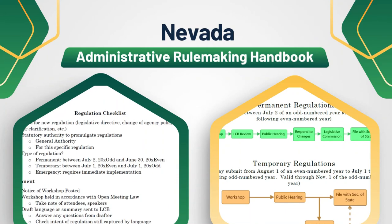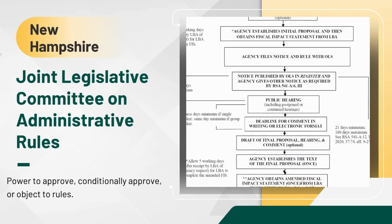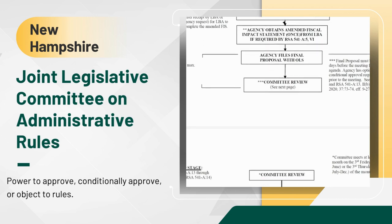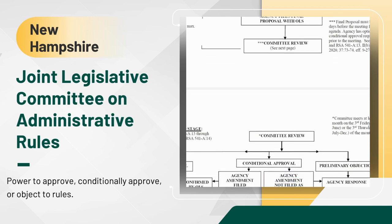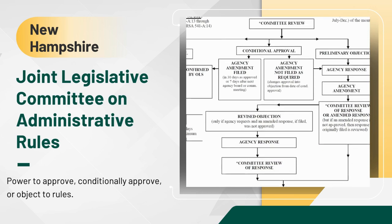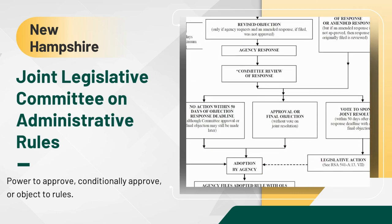Nevada has a detailed administrative rulemaking manual available online, including a step-by-step explanation of their administrative rulemaking process and a regulation checklist covering the need for new regulation, the statutory authority for new regulations, and if the regulation is permanent, temporary, or emergency. New Hampshire has a Joint Legislative Committee on Administrative Rules, JLCAR, which has the power to approve, conditionally approve, or object to rules. On their website is a flowchart explaining their process. Taking no action within 50 days is equivalent to approving a rule in New Hampshire, except proposed interim rules, which must be explicitly approved by JLCAR. Existing rules expire every 10 years and must be reauthorized by JLCAR.